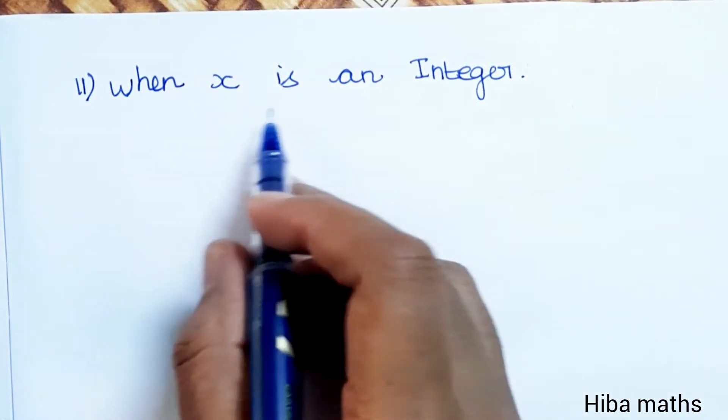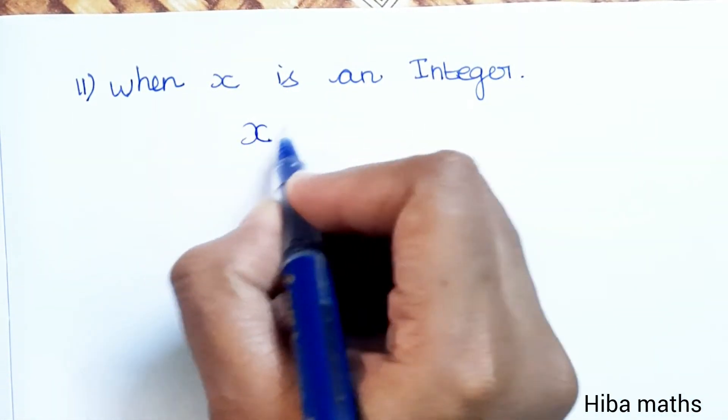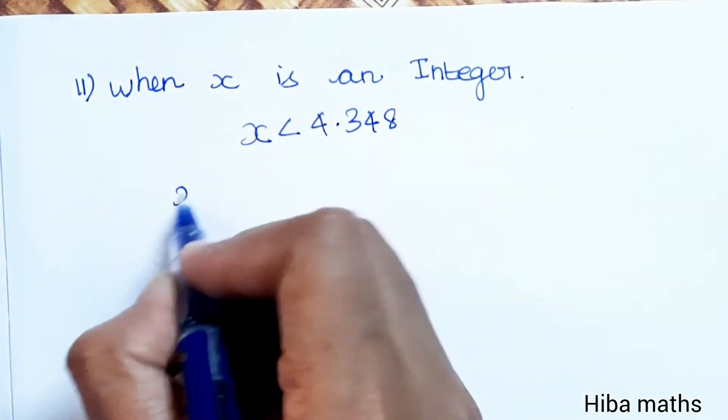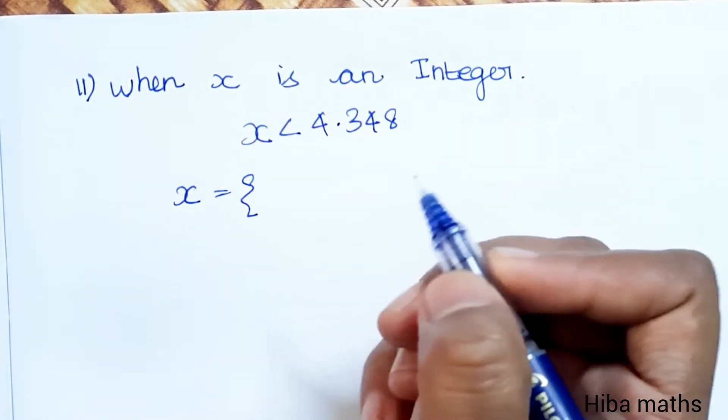Second subdivision: when x is an integer. x is less than 4.348, then x is equal to integer values.